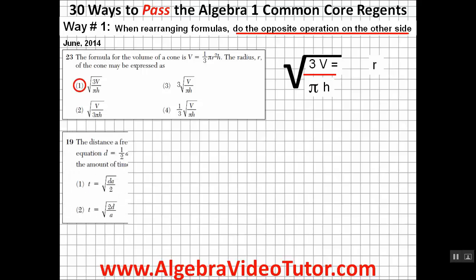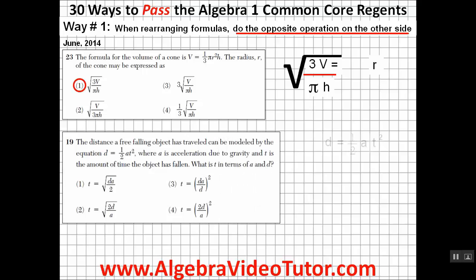And even if they decide to change the letters and numbers around on you, like they did here on the June 2015 Algebra I Regents, the same concept still applies. To solve for T, move A to the bottom of the other side, eliminating choices one and three. Multiply D by 2 to get rid of the one half, and then take the square root of the whole formula to get rid of the square, making the answer choice two.